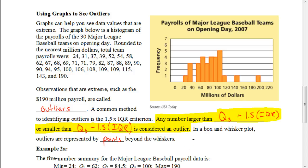In the previous video we were introduced to the concept of box plots. In this video we're going to be looking at how to identify outliers, and we're going to use some of that five number summary that we did in box plots to be able to find an outlier. If you're not familiar with that or if you have not watched that video yet, you want to make sure you go back and do so first.